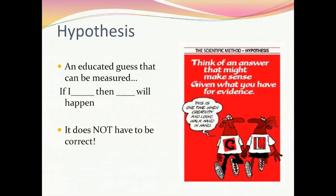The next step in the scientific method is to develop a hypothesis. A hypothesis is an educated guess that you can further test. It should read something like this: if I blank, then blank will happen. The most important thing to remember about a hypothesis is it does not have to be correct.